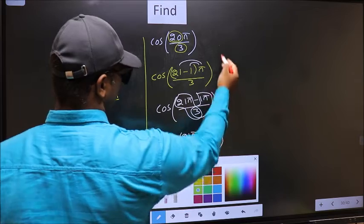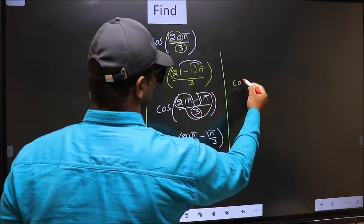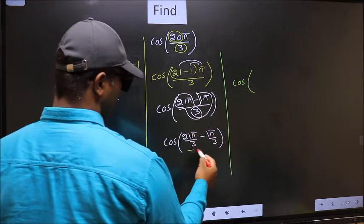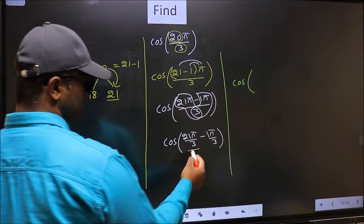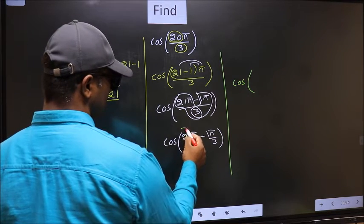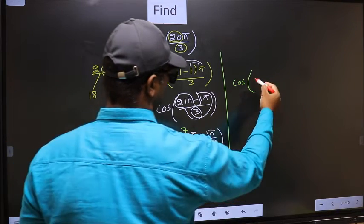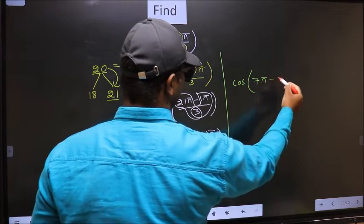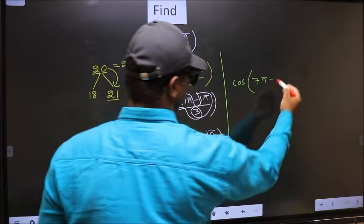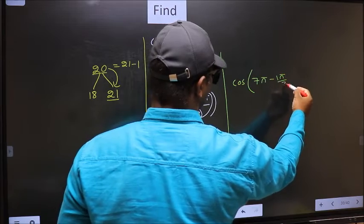Next. Cos. Now here you should cancel. 3 ones, 3 sevens. So we get 7π minus here no change, 1π by 3.